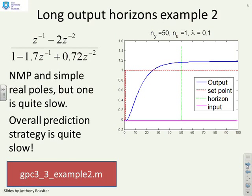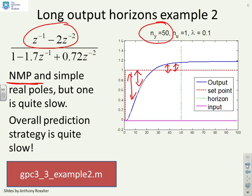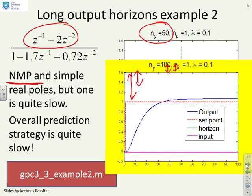Different example then. You'll remember this second example had a non-minimum phase characteristic. You'll see that if you look at this numerator. But one of the poles is quite slow. With ny equals 50 the predictions aren't too bad but you'll notice as before that it's giving a sort of compromise between positive errors and negative errors within the prediction horizons. But it's not too bad. If I increase the horizon, ny equals 100, again you see the steady state errors have reduced. So as I increase the horizon the errors are getting smaller.